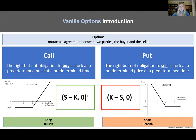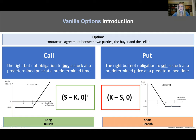On the put side, we see that we have an infinite possible profit on the downside, where you have this bearish exposure — you want the stock to go down, and the value of the put will increase. A call is going to be the opposite, where you are bullish and you want the value of the stock to increase.